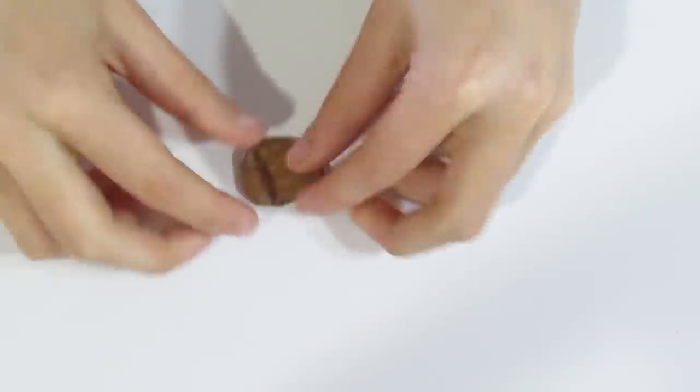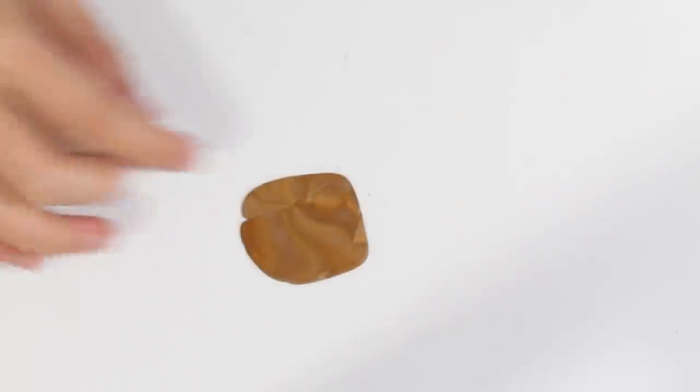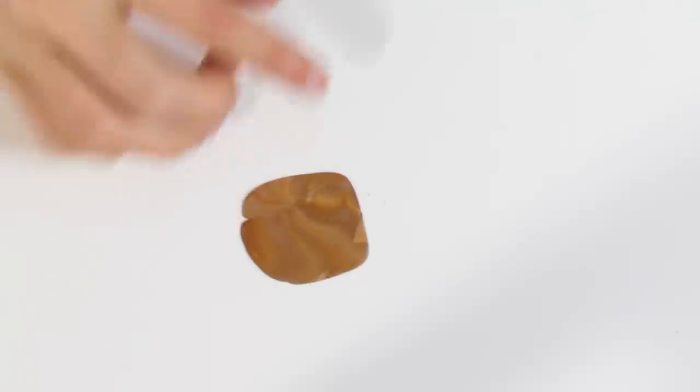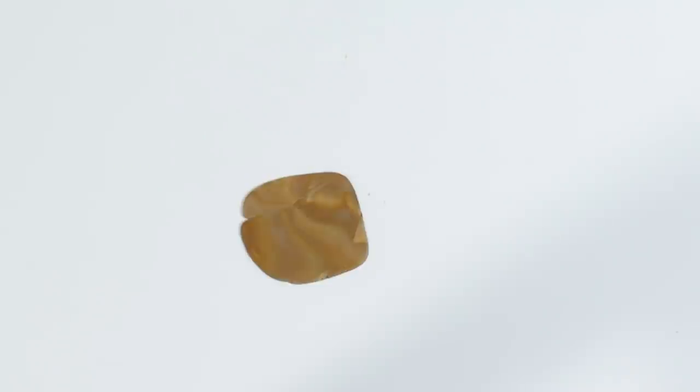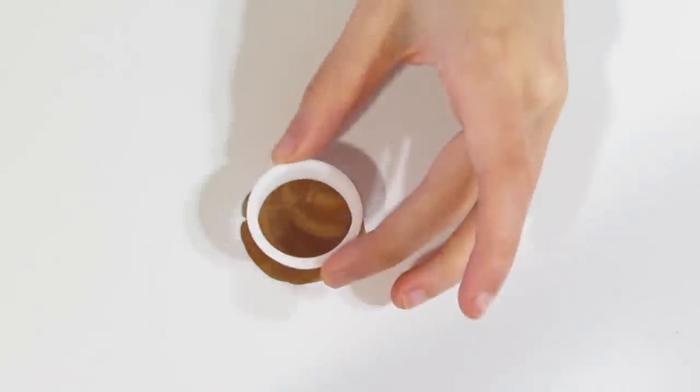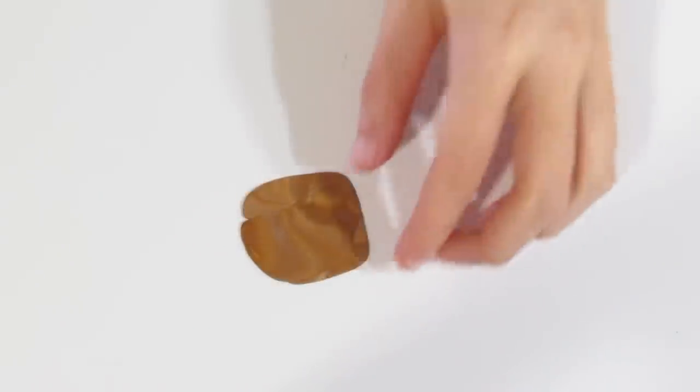I'm just warming that into a rectangle and then I'm going to roll that through my pasta machine. And there we go. We just end up with something with a light marbled background. And it just needs to fit a cutter of your choice. The size of the cutter that I am using is about three centimeters in diameter. So you really don't need a lot of clay. Now because we are creating earrings you want to do two of these.